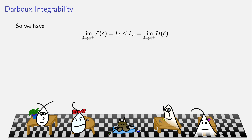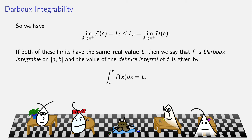We know that both limits L sub L and L sub U both exist, and L sub L is less than or equal to L sub U. If they happen to be equal and that is a real number — not both plus infinity and not both minus infinity — then we say that the function is Darboux integrable on the interval. The value of the definite integral is given by that shared limit. This is our first definition of what an integral is.